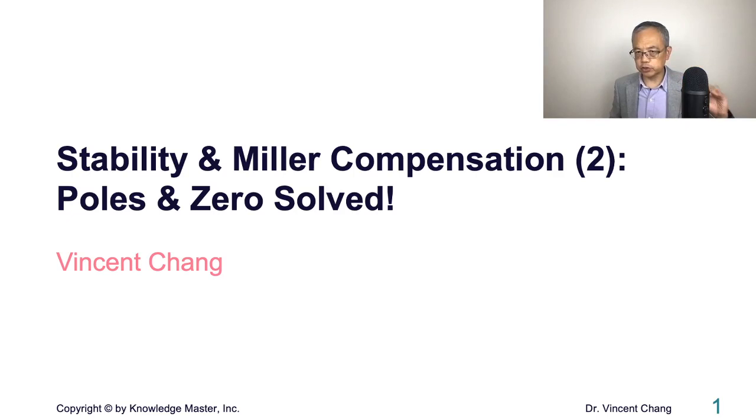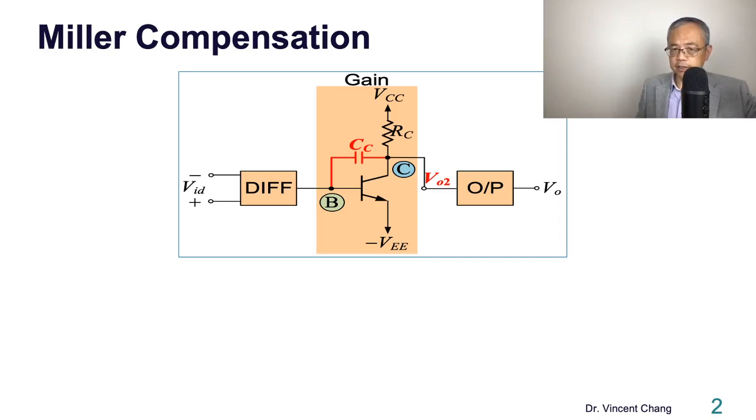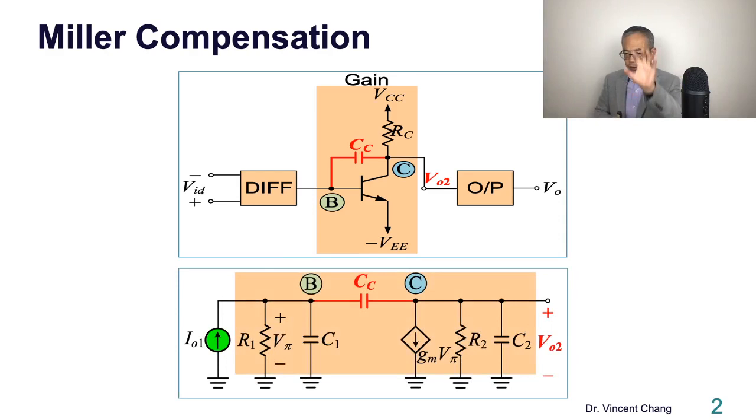This is the circuit I presented in the previous lecture, which shows a multi-stage amplifier, compensated. Why? Because CC, the compensation capacitor, is connected across the feedback path between the output and input of the gain stage. This is called Miller compensation. So multi-stage amplifier: differential stage, gain stage, and output stage. Let's focus on the gain stage.